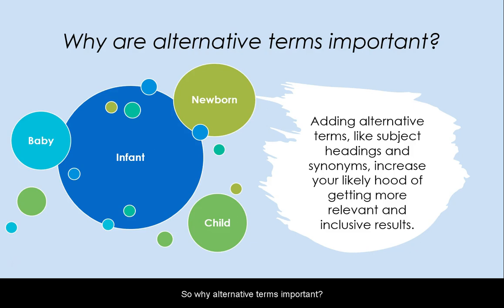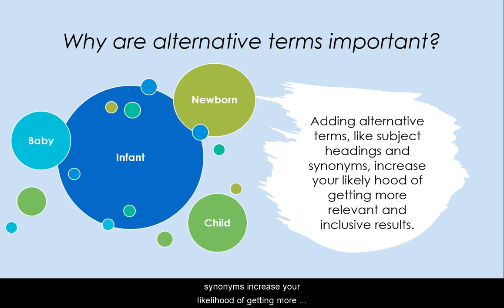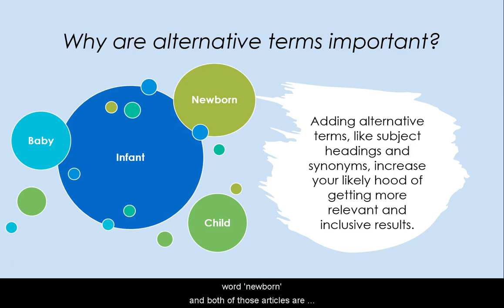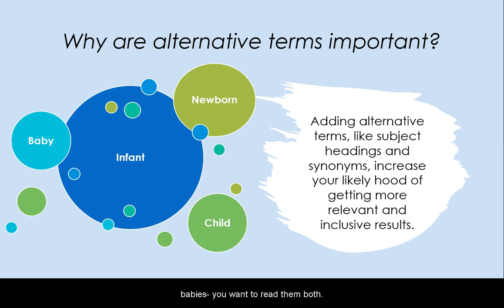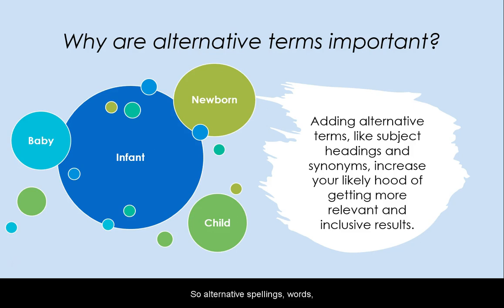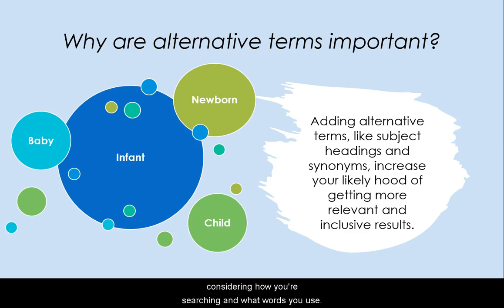So why are alternative terms important? Adding alternative terms like subject headings or synonyms increases your likelihood of getting more relevant and inclusive results. If one author uses the word 'baby' and another uses the word 'newborn,' and both of those articles are talking about hearing problems in premature babies, you want to read them both. Alternative spellings, words, and context are all really important when you're considering how you're searching and what words you use.